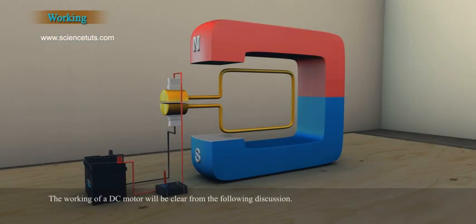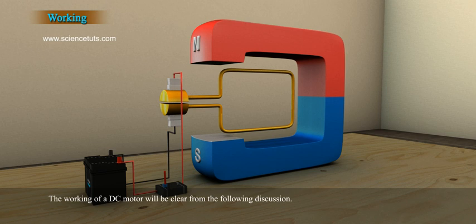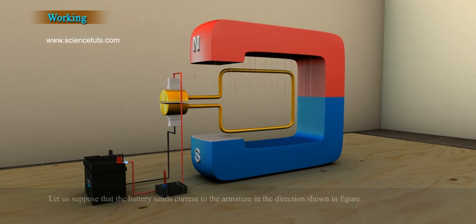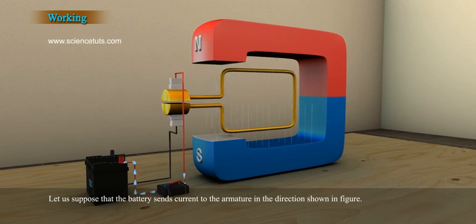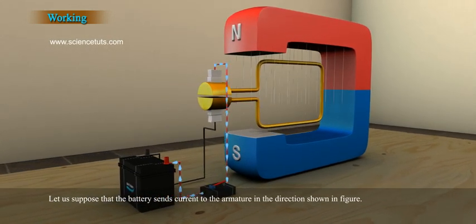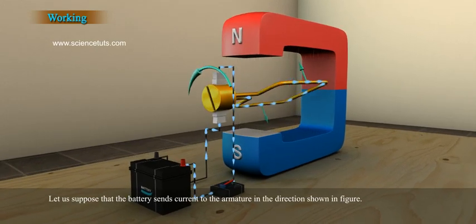Working: The working of a DC motor will be clear from the following discussion. Let us suppose that the battery sends current to the armature in the direction shown in the figure.